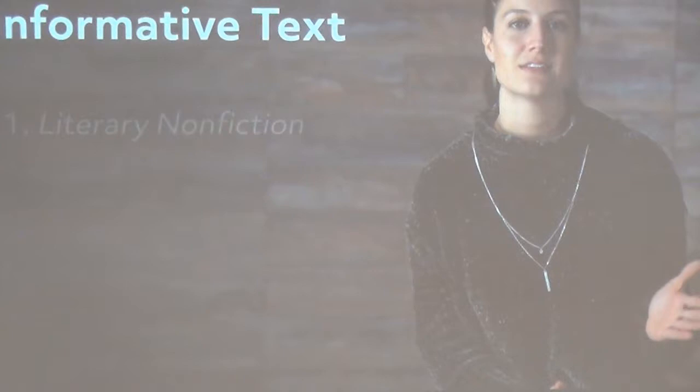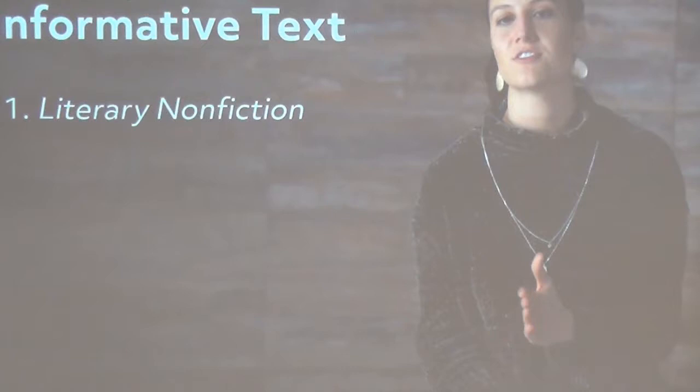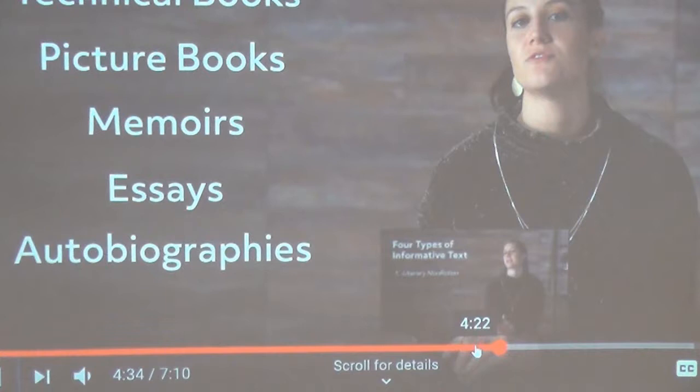Now let's look at the four different types of informative texts. Books can be excellent sources. Biographies on historical figures fall under the informative category. Technical books on computer software are also informative. So are picture books on astronomy or the Earth. Literary nonfiction like memoirs, essays, and autobiographies also fall into these categories. While poetry is known for its illusion, this style of literature...